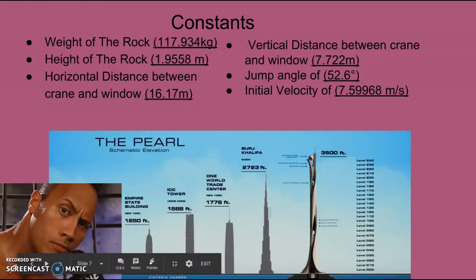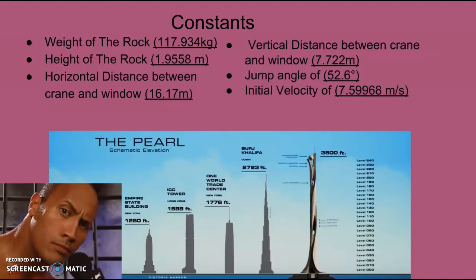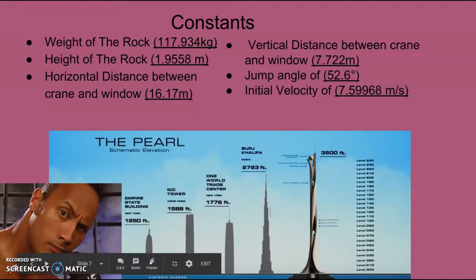We also found the jump angle of 52.6 degrees from LoggerPro, and the initial velocity that we got of 7.5996 was given by an average NFL linebacker at its peak at a 40-yard dash.